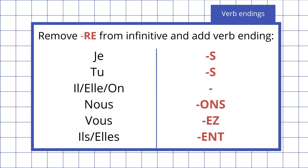To conjugate RE verbs into the present tense, remove the RE from the infinitive and add the correct verb endings. You'll notice that this is exactly the same as when we conjugate ER verbs and IR verbs. The only difference is that the verb endings are different.